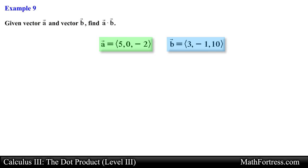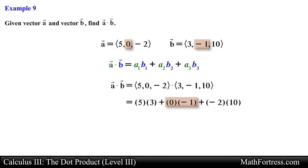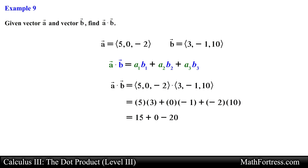Here we have two vectors in space with three components. The dot product is computed similarly to the previous example using the component definition. We multiply the x, y, and z components together and add them. The first product is 15, the second is 0, and the third is negative 20, so the dot product equals negative 5.